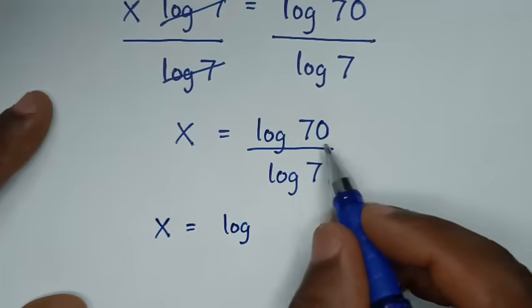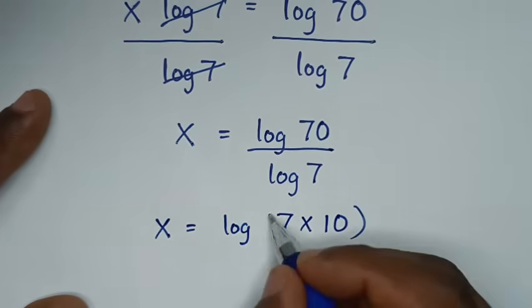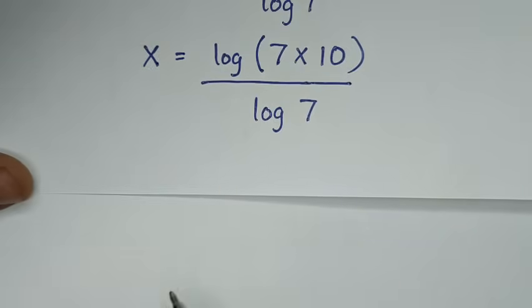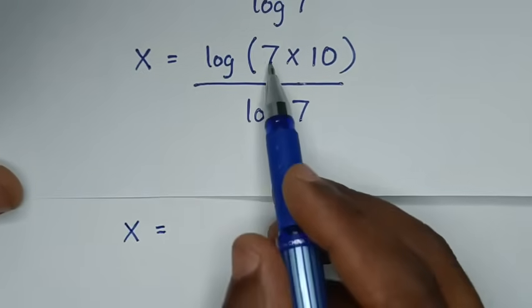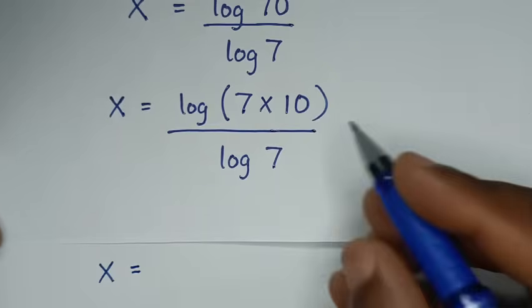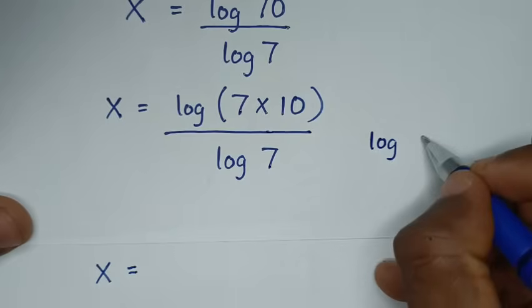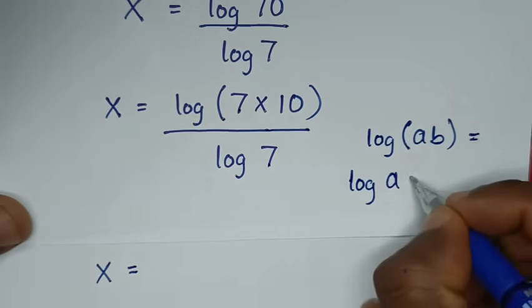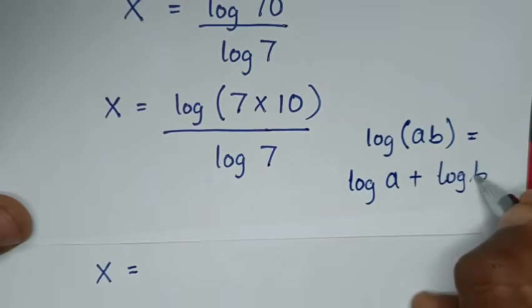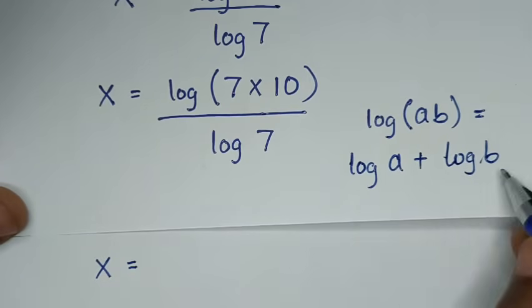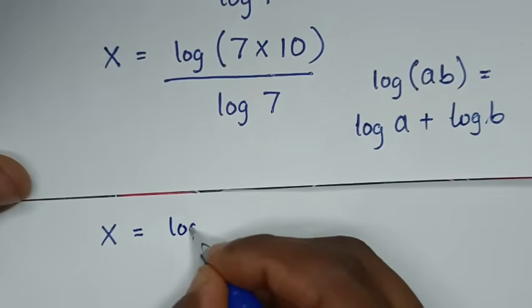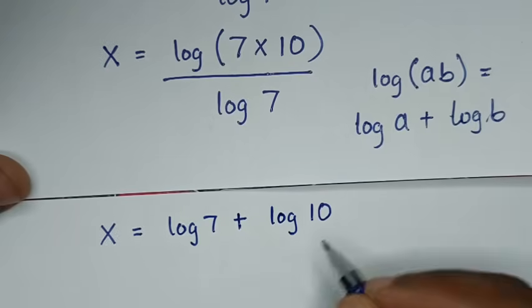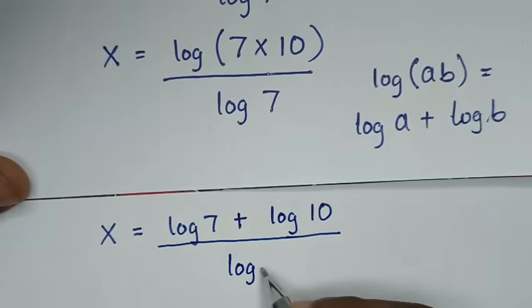Now this is not in the simplest form. 70 is the same as 7 times 10, so x is equal to log of 7 times 10, in bracket, over log of 7.